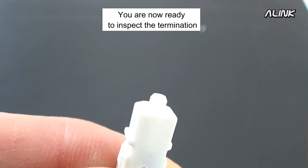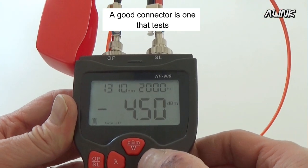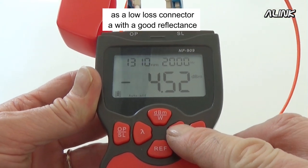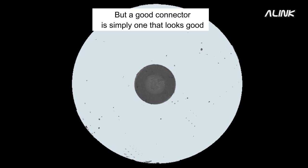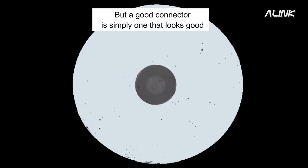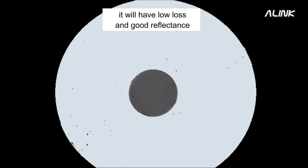You are now ready to inspect the termination. What is a good connector? A good connector is one that tests as a low loss connector with good reflectance. But a good connector is simply one that looks good: scratch free, smooth end face, fiber in the center of the ferrule. If a connector looks good, it's almost sure it will have low loss and good reflectance.